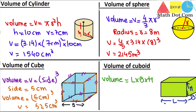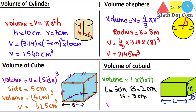For example, if L = 5 cm, B = 2 cm, and H = 3 cm, then V = 5 × 2 × 3 = 30 cubic centimeters. This is how you can find the volume of these four different 3D objects that are most commonly encountered. That's all from today's lecture. Thank you.